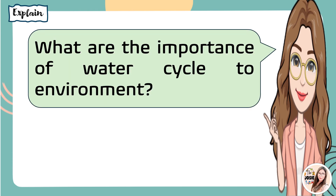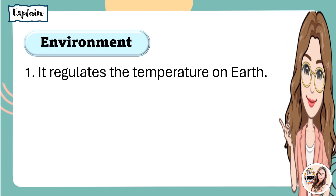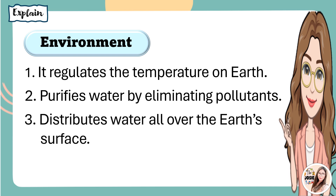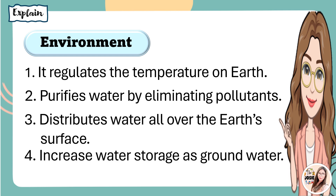And lastly, what are the importance of the water cycle to the environment? You got it right. First, it regulates the temperature on Earth. Next, it purifies water by eliminating pollutants. Number three, it distributes water all over the Earth's surface. And lastly, it increases water storage as groundwater.